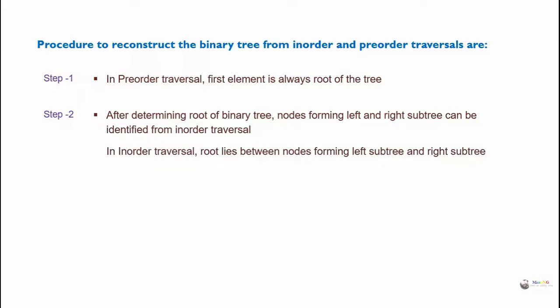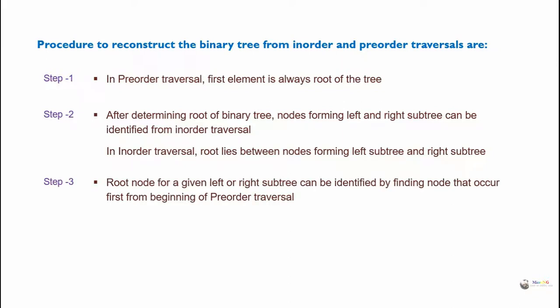In in-order traversal, the root lies between nodes forming the left subtree and the right subtree. The root node for a given left or right subtree can be identified by finding the node that occurs first from the beginning of the pre-order traversal. Repeat steps 2 and 3 until the complete binary tree is constructed.